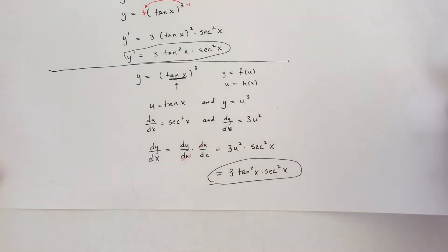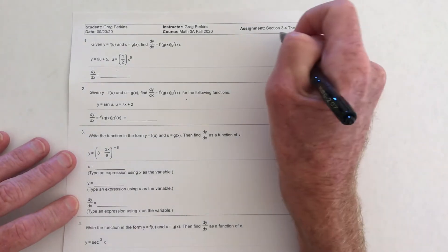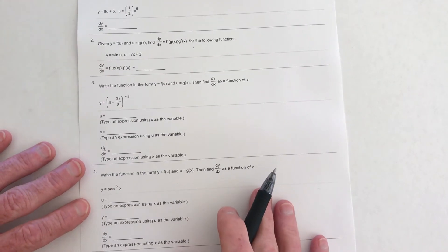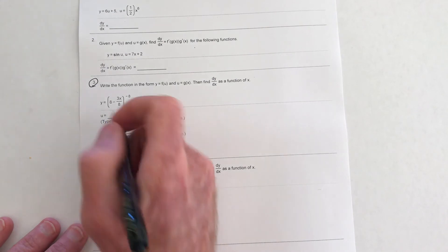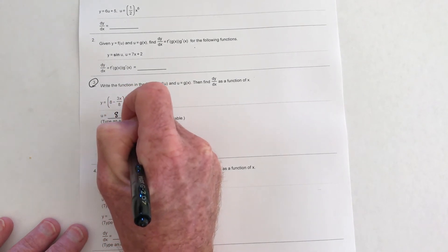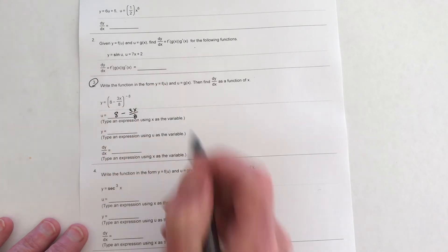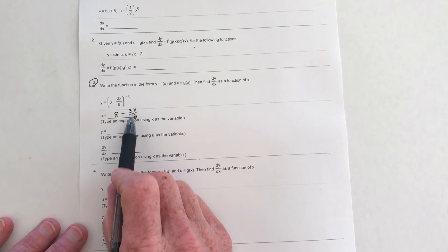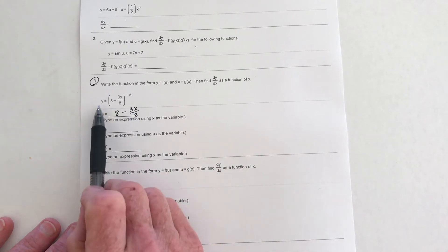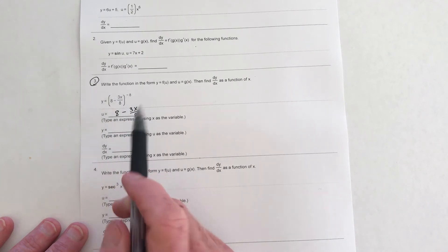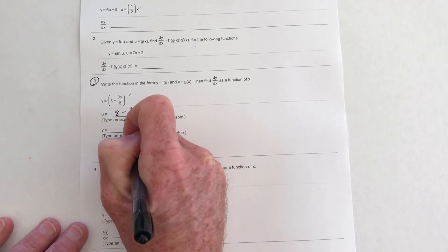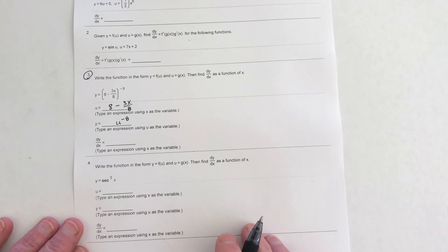Let's look at another example from the homework, section 3.4 the chain rule. I already did a trig one, so let me do number 3. The u would be the inside part, so u equals (8 minus 3x) over 8 — it's a function of x. And then y, replacing that entire inside part with u, is just u raised to a negative 8.